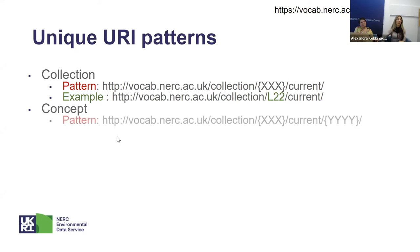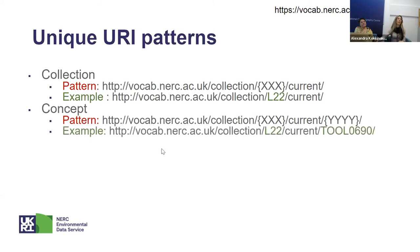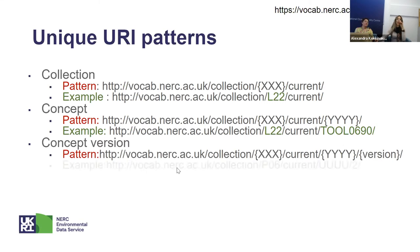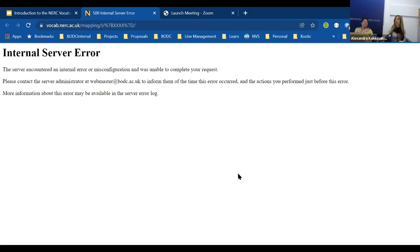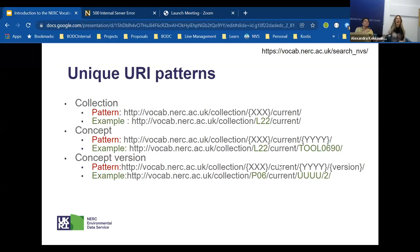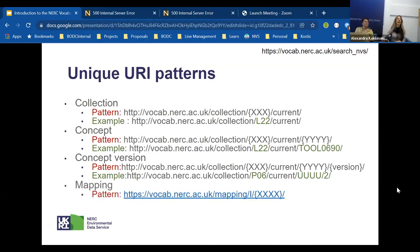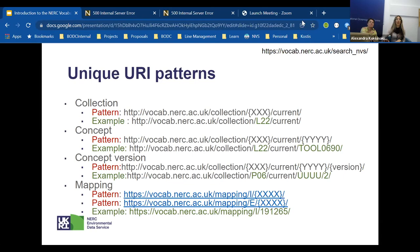Concepts in NVS have a unique URI, and the pattern they follow is that they have to belong to a certain collection and then follow with their own unique identifier. Concepts also have versions so you can track how they've evolved through time, and the version is a number at the end of the concept's URI. We also have unique URIs for mappings, and we divide our mappings into internal and external ones.